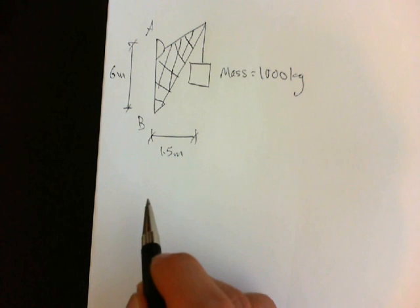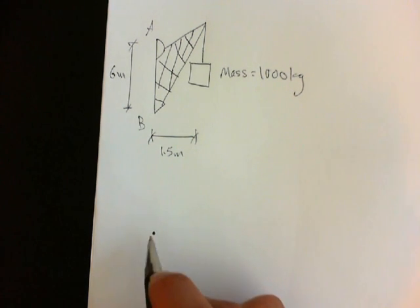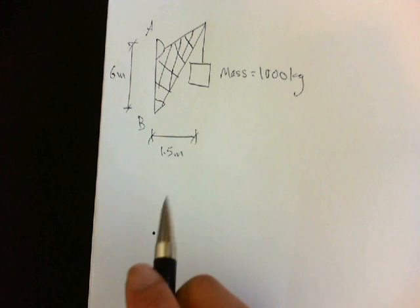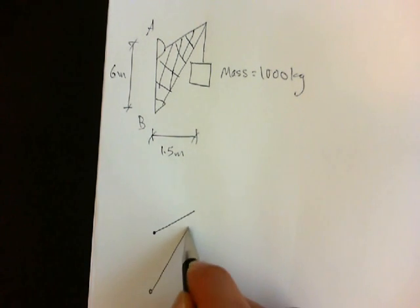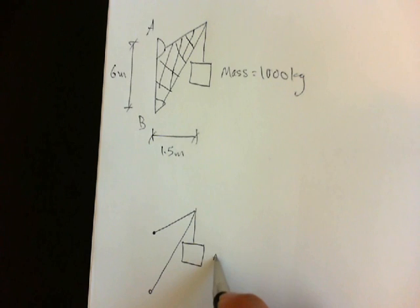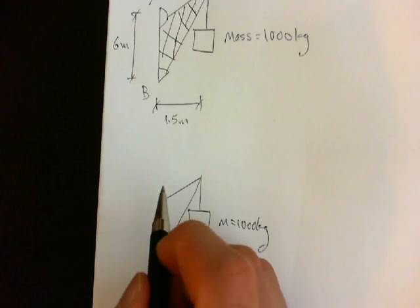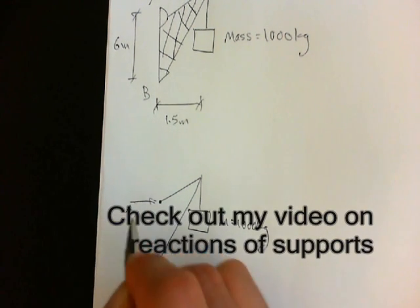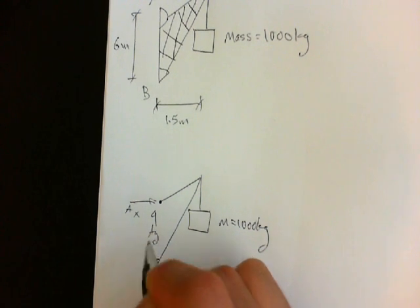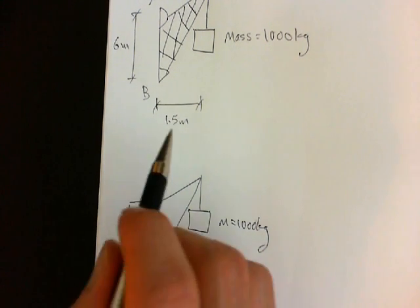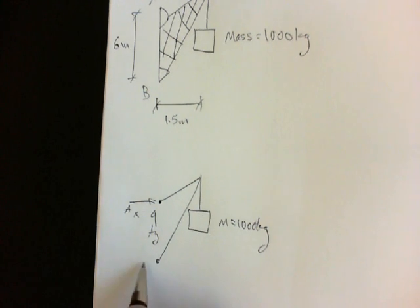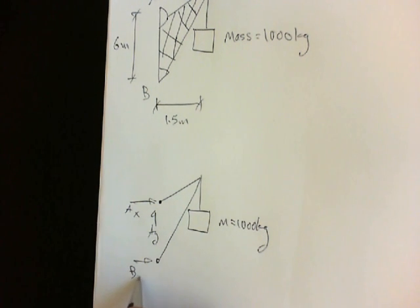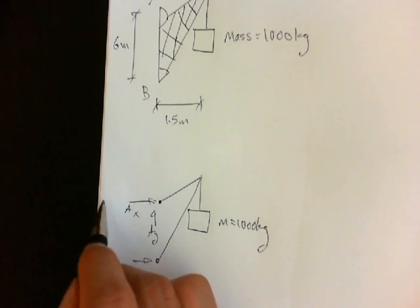So we start by drawing our free body diagram. Here's support A, here's support B. Now since A is a pin, it's able to support two reactions: AX and AY. And since B is a rocker, it's only able to support one reaction. Call it BX. And here are the distances.